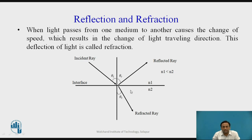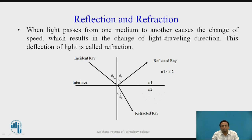As you can see in this diagram, this is an incident ray. When the incident ray hits the interface at angle theta-i, light passes from one medium to another. Here we have the normal, medium n1 and n2, where n1 is less than n2 — n2 is the denser medium. When light passes from one medium to another, it causes a change of speed, which also results in a change of the light's traveling direction. This deflection of light is called refraction.